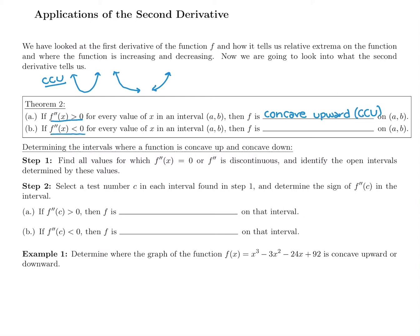If we plug into our sign chart and get a negative second derivative — something less than zero — that has nothing to do with increasing and decreasing, because the second derivative tells us concavity. If it's negative, the function is concave downward. For something concave down, it's flipped over — an upside down U. It could be the full upside down U, just the left half, or just the right half.